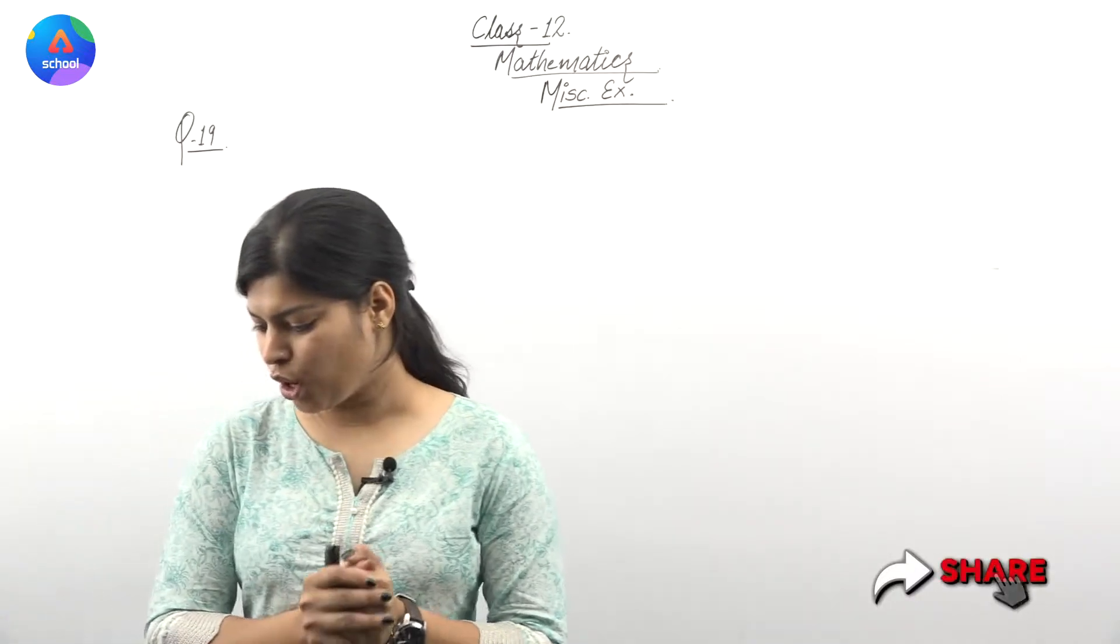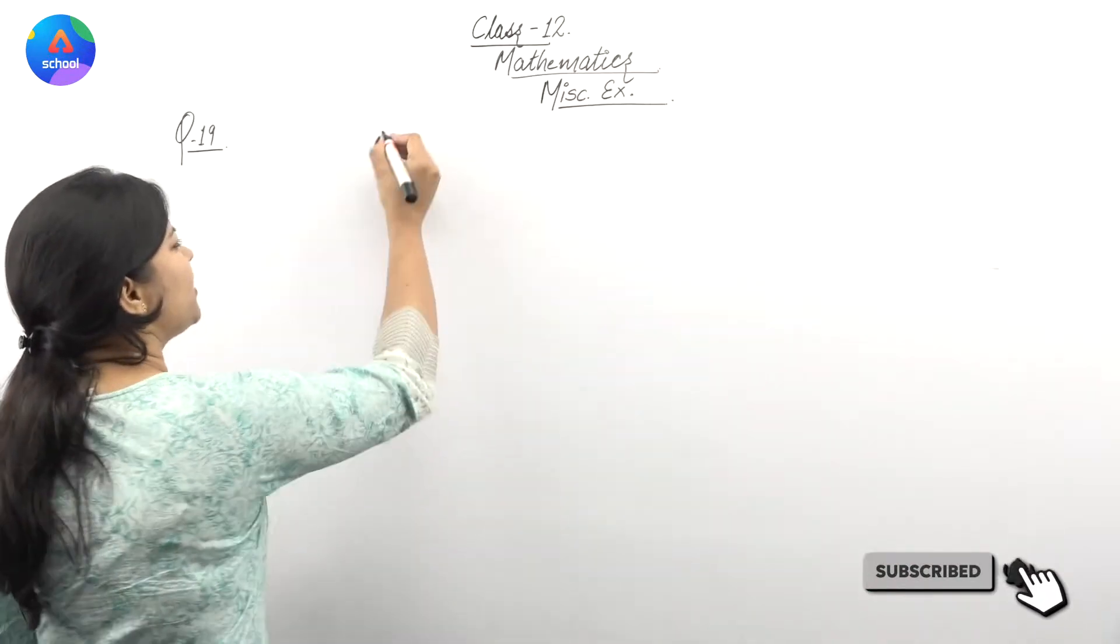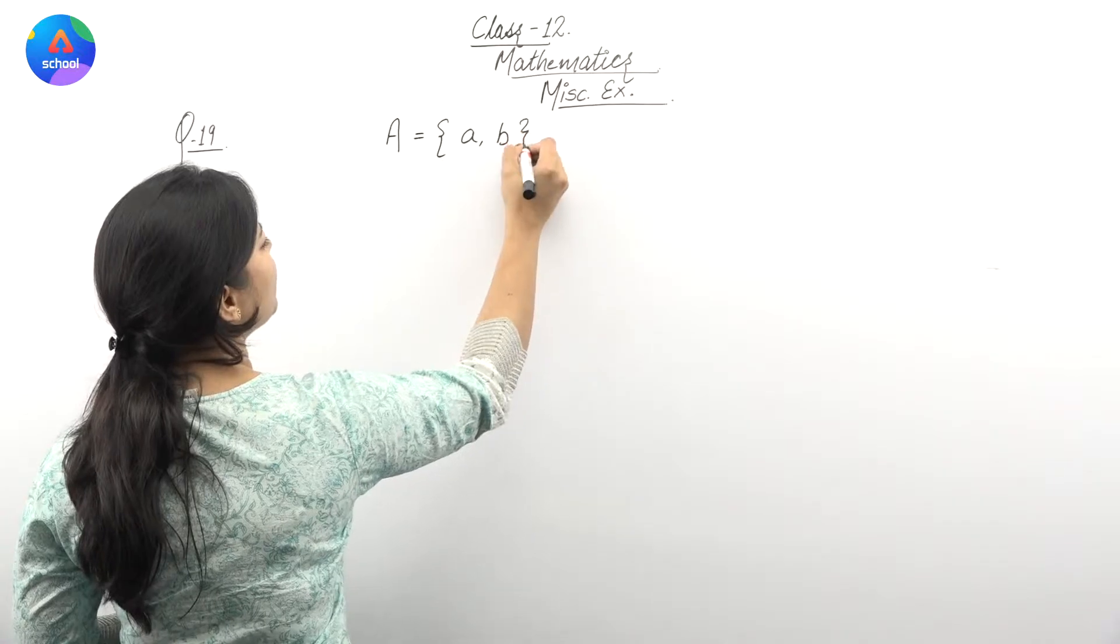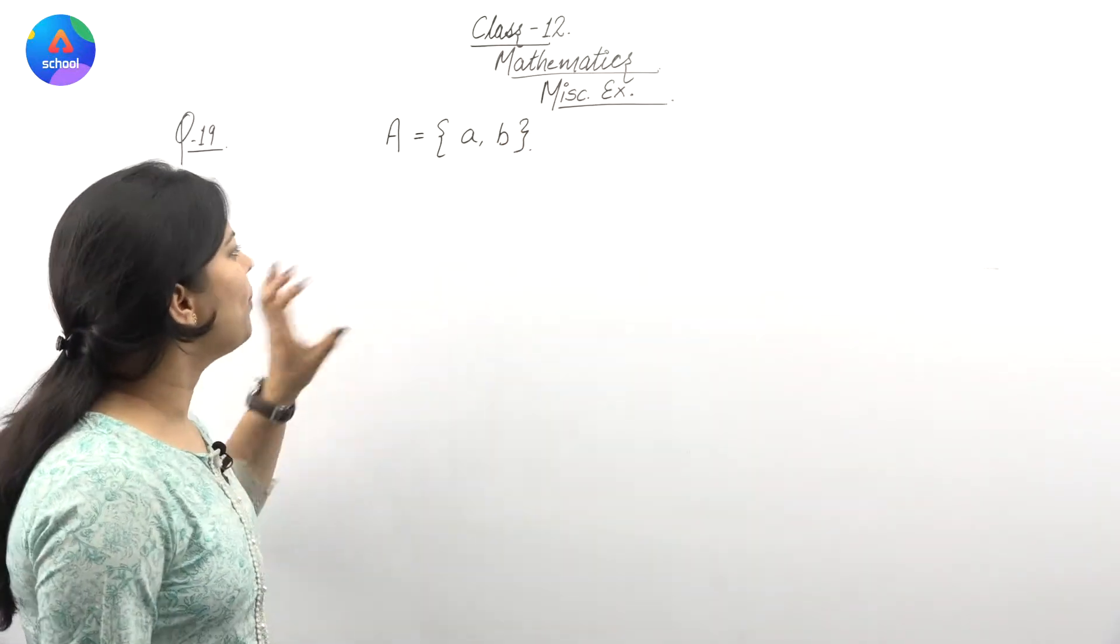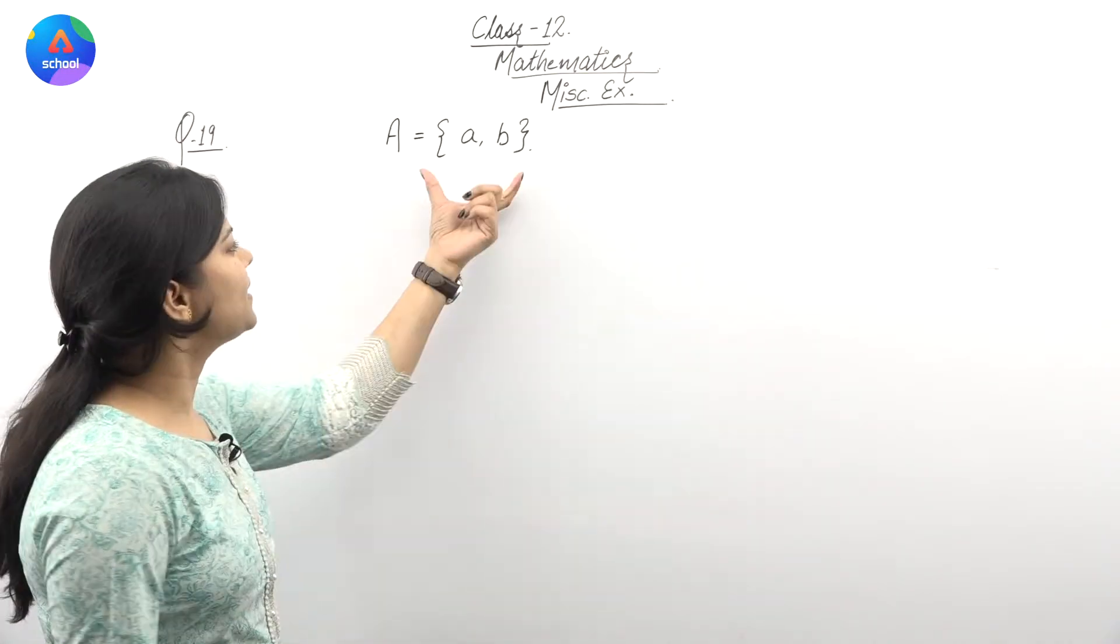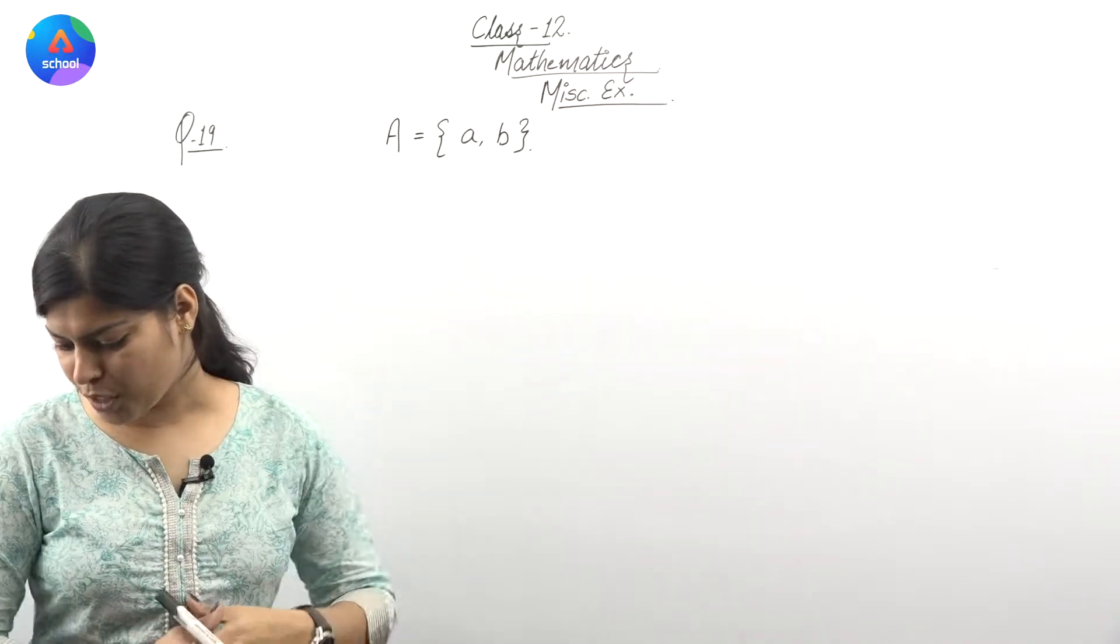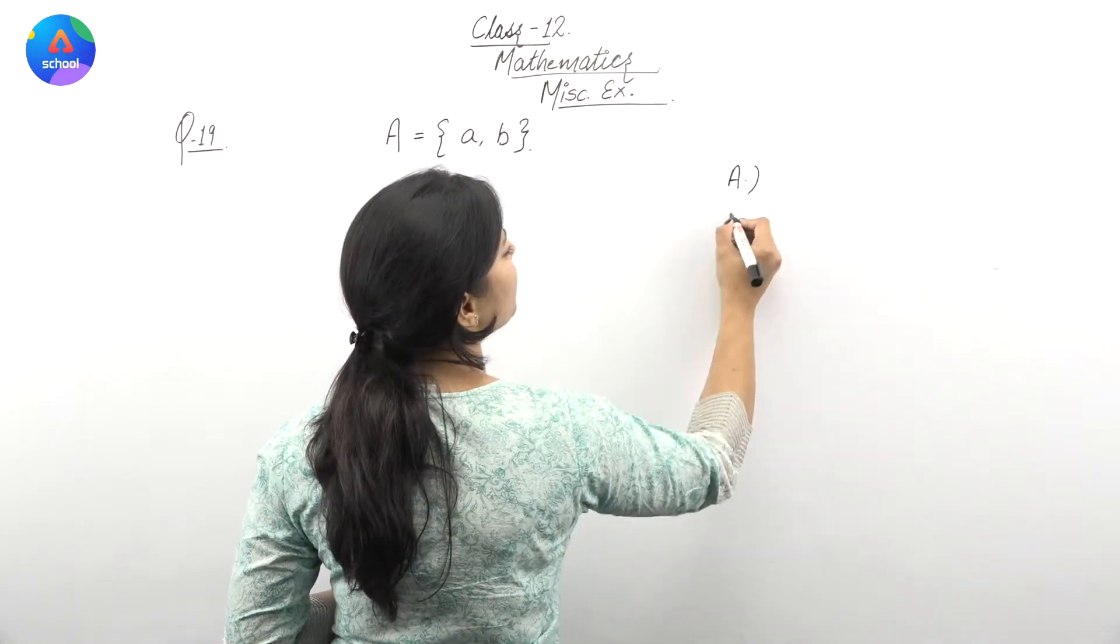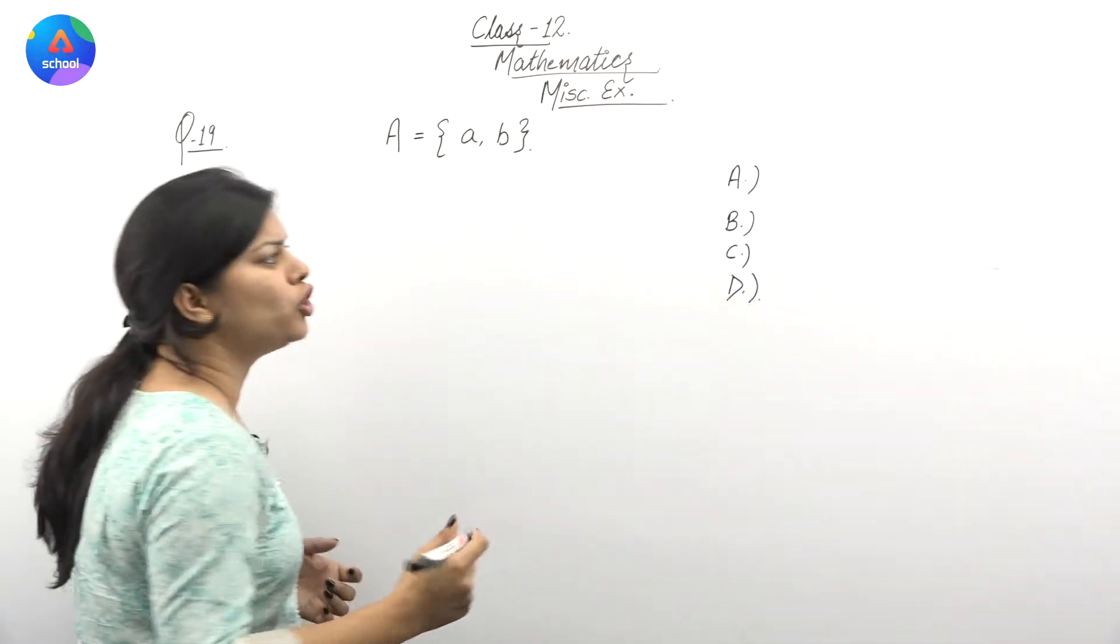In question 19, let's look at what is given and what we need to find out. Number of binary operations on the set - we have a set A which has two elements a and b. I have named this set as A. We need to find the number of binary operations on this set.